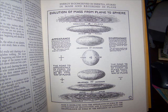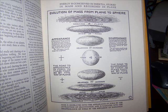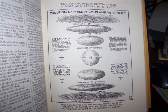Now I will read what is on the chart on this page. Energy is conceived in inertia, stored in mass and recorded in plane. This shows the progression from the nebulous to the ovoid to the oblateness to the sphere and back from the oblateness to the ovoid to the nebulous again. At the bottom it says mass is generated into the appearance of form by the attraction of gravitation and is radiated into the disappearance of form by the repulsion of radiation.